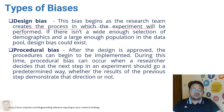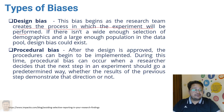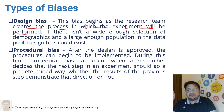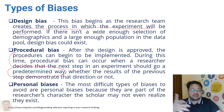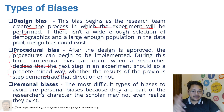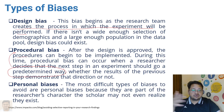Next is procedural bias. Once the design is approved, the procedure begins to be implemented. Procedural bias can occur when a researcher decides that the next step in the experiment should go in a pre-determined way, leading to bias related to the procedure followed for that particular experiment. Personal bias is one of the most difficult types of biases to avoid, because it is related to the researcher's character, and they may not be able to recognize it or avoid it.